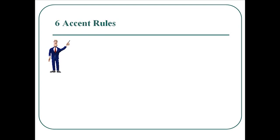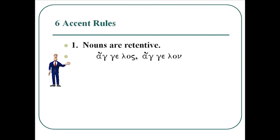Now that we know the potential each accent has, there are six rules that structure how the accents are actually placed on words. The first accent rule is that nouns are retentive — however you learn the base form of the noun, it tries to keep the accent in the same location unless forced off that syllable. So it's angelos, and when angelos becomes angelon, the accent stays on the antepenult. Thus nouns are retentive.